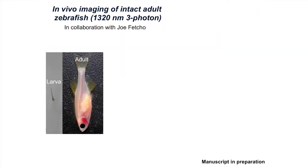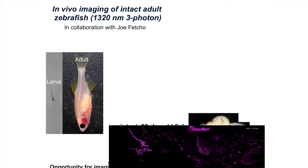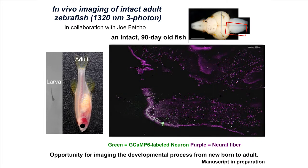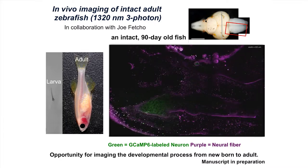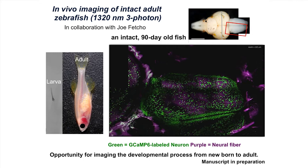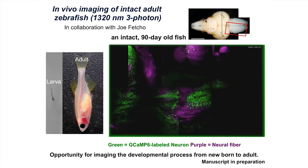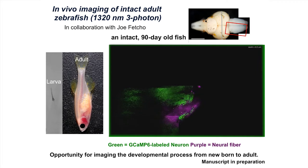Zebrafish are a favorite subject for neuroscientists: larval zebrafish a few days old are completely transparent. But what about adult three-month-old fish? Working with collaborator Joe Fetcho at Cornell Neuroscience, we imaged the intact adult zebrafish, imaging through scale, skull, and into the telecephalon area of the brain. Purple third harmonic generation shows neurofibers, green shows labeled neurons. This opens up opportunities for imaging developmental processes from newborn all the way to adult.